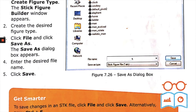A shortcut is available to save changes in an SDK file: click File and click Save, or alternatively press Ctrl+S. You need to press these keys together to get the same effect as using File > Save.